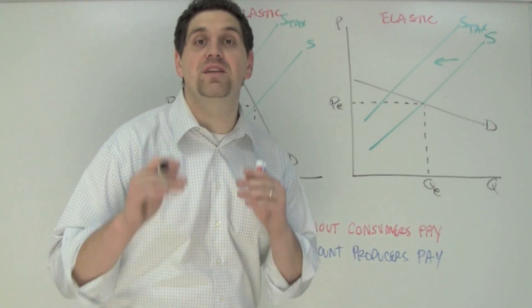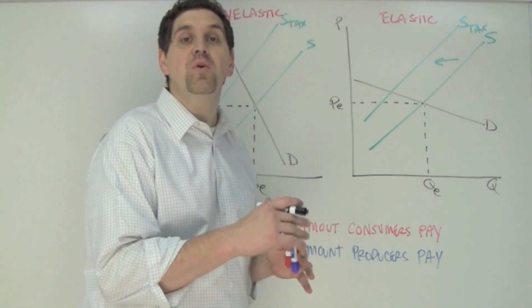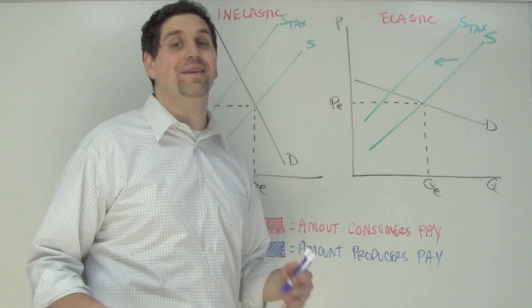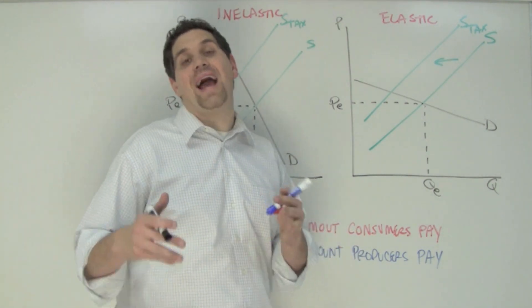This question is about when the government taxes producers. When that happens, consumers pay a certain portion of that tax and producers pay a certain portion of that tax. Some teachers call it a tax wedge, other teachers call it tax incidence.